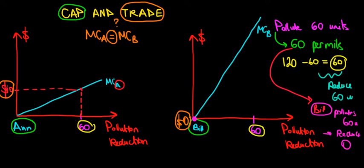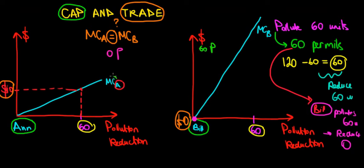How does the trade happen? Bill currently has 60 permits and N has zero. N would like to buy one permit so she doesn't have to reduce that unit of pollution, avoiding the cost of reducing it. In other words, we would trade one permit from Bill to N.